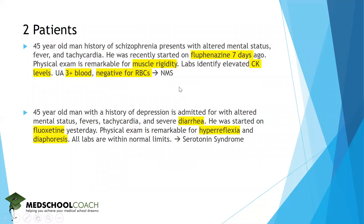Looking at our two patients again: the first patient is diagnosed with NMS — key features are fluphenazine started seven days ago, muscle rigidity, elevated CK, and 3+ blood in urine negative for RBCs, suggesting myoglobinuria. The second patient has serotonin syndrome — key features are diarrhea, fluoxetine started yesterday, hyperreflexia, and diaphoresis. Both patients initially look similar with altered mental status, fever, and tachycardia, but the remaining symptoms allow you to differentiate the two.